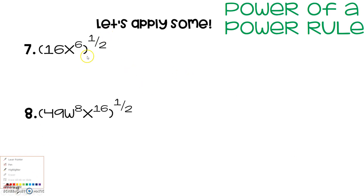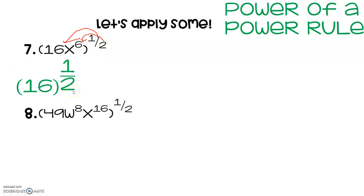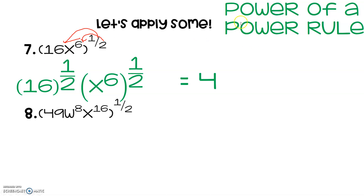All we're going to do is share that love — distribute that 1/2 exponent to the 16 and to x to the 6th power. So we've got 16 to the 1/2 power times x to the 6th to the 1/2 power. You can type 16 to the 1/2 into your calculator and get 4, because anything to the half power is the square root. For x to the 6th to the 1/2, apply the power of a power rule and multiply the exponents: 6 times 1/2 is 3. So the final answer is 4x cubed — box your final answer.